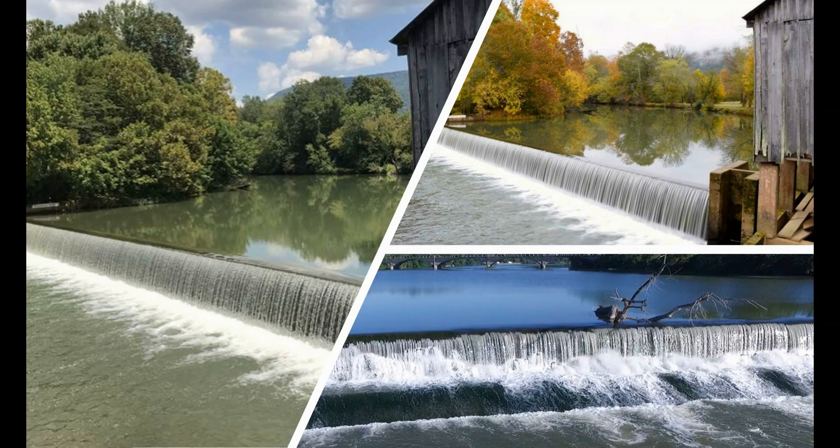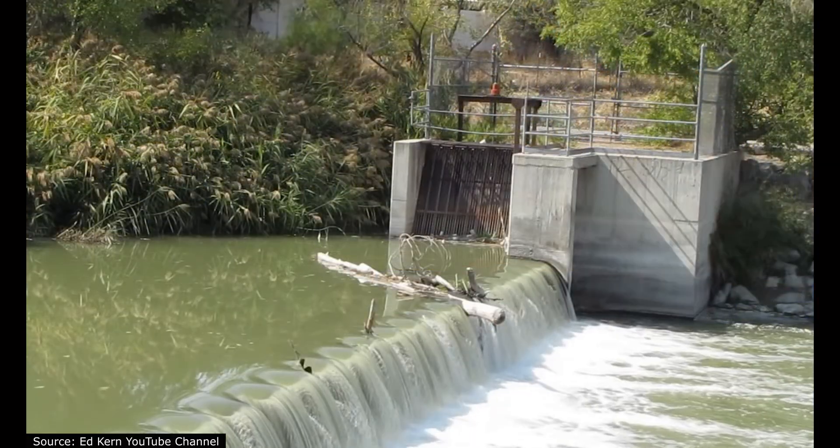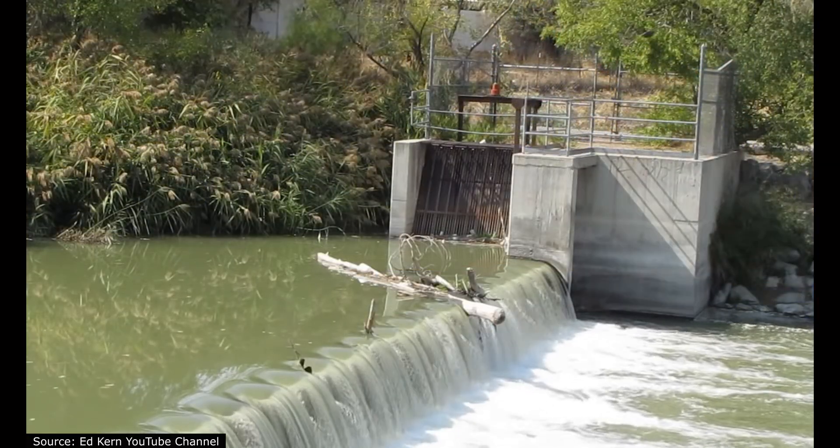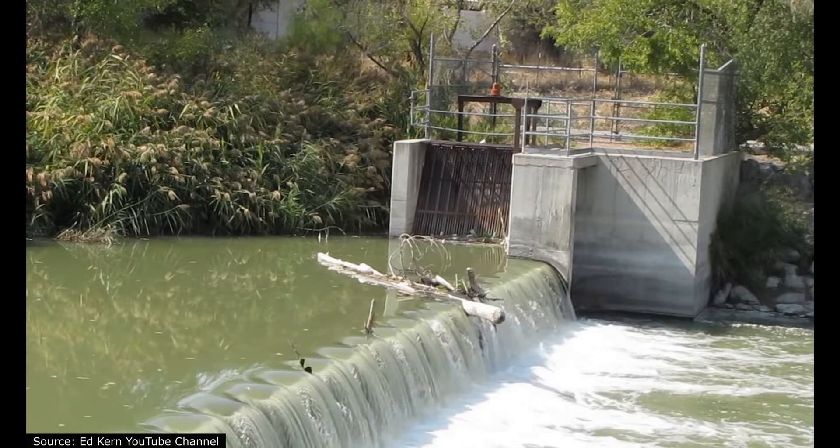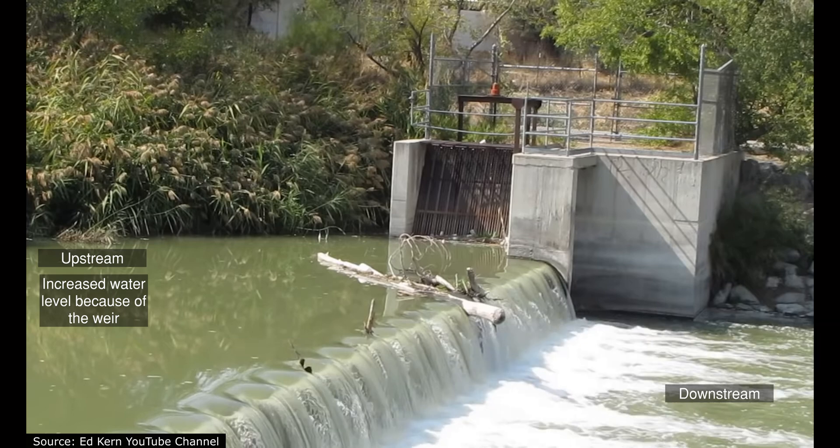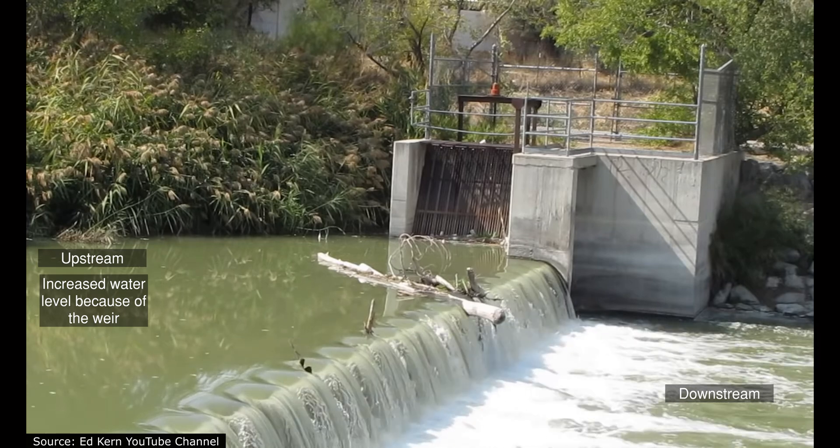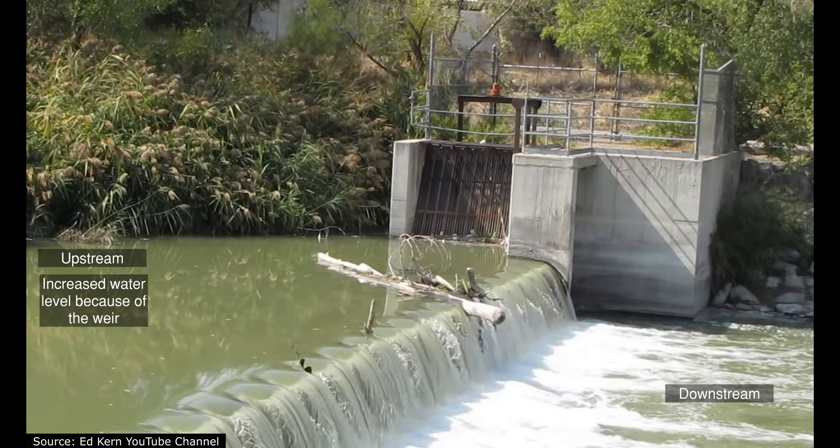Weirs are wall-like structures that are used to control water level, also to divert flow, and also measure flow rates and discharge in different open channels. If the discharge is constant in a given open channel, when you install a weir, that generally increases the upstream flow depth, and also it leaves the downstream depth unaffected.